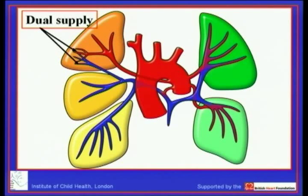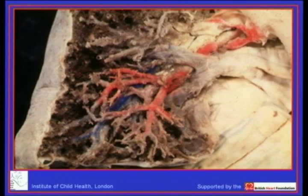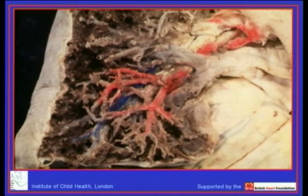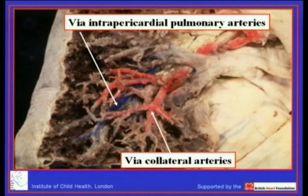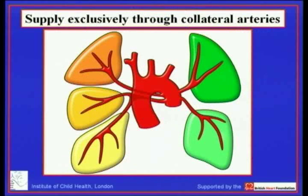We also need to account for dual supply. In an elegant study, Jung Wook So, a Korean pathologist who spent a year at the Royal Brompton Hospital, performed an exquisite dissection with Dr. Ho and painted the systemic to pulmonary collateral arteries in red and the intrapericardial pulmonary arteries in blue, showing unequivocally that they were ramifying within the same bronchopulmonary segments. So there can indeed be dual supply.